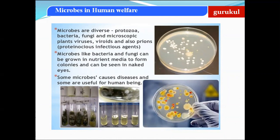Prions are proteinaceous infectious agents. Bacteria and fungi can be grown in nutrient media to form colonies and can be seen with the naked eye. However, individual bacteria are microscopic in size and can only be observed under the microscope, but when they form a colony in a nutrient media, you can see them with the naked eye.